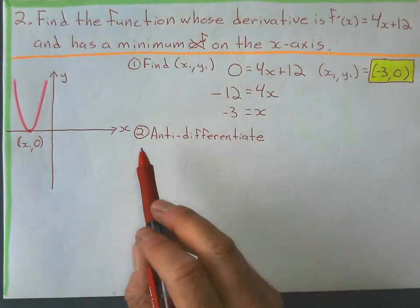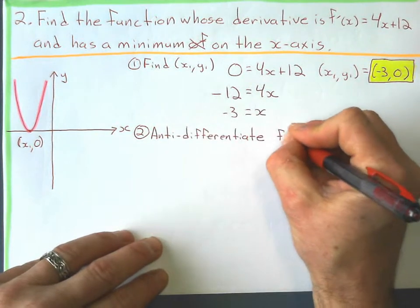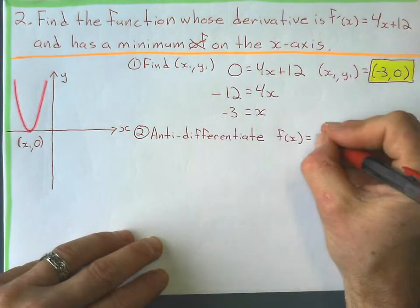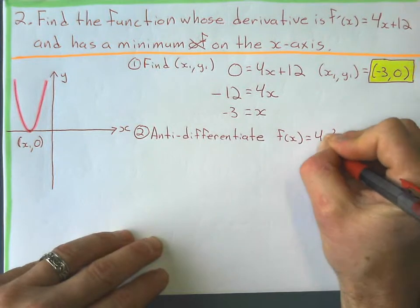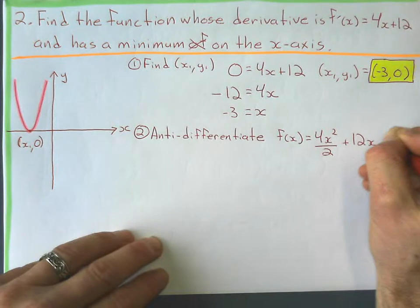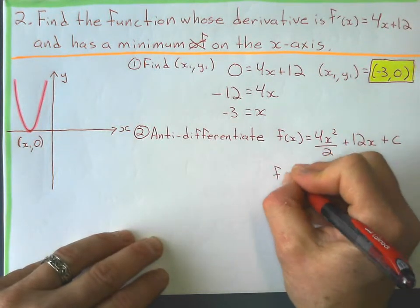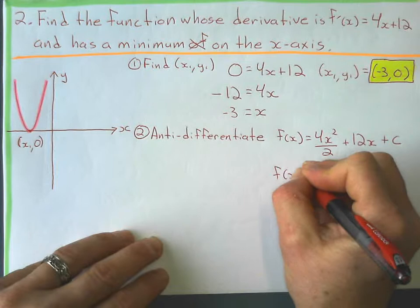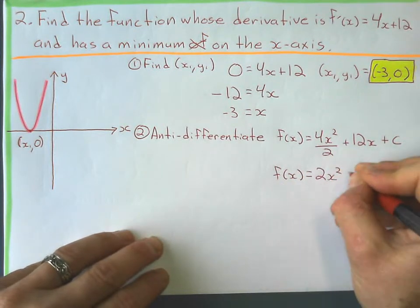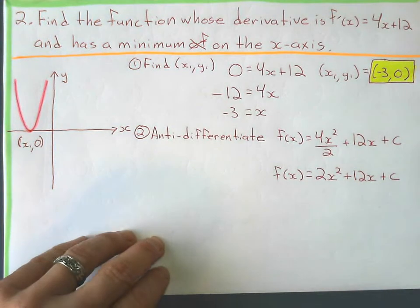Next step, just like last time, is to anti-differentiate this function to find f(x). That gives me 4x squared over 2, plus 12x, plus a constant — and I'll use that point to figure out the constant. Simplifying: 4 over 2 gives 2x squared plus 12x plus c.